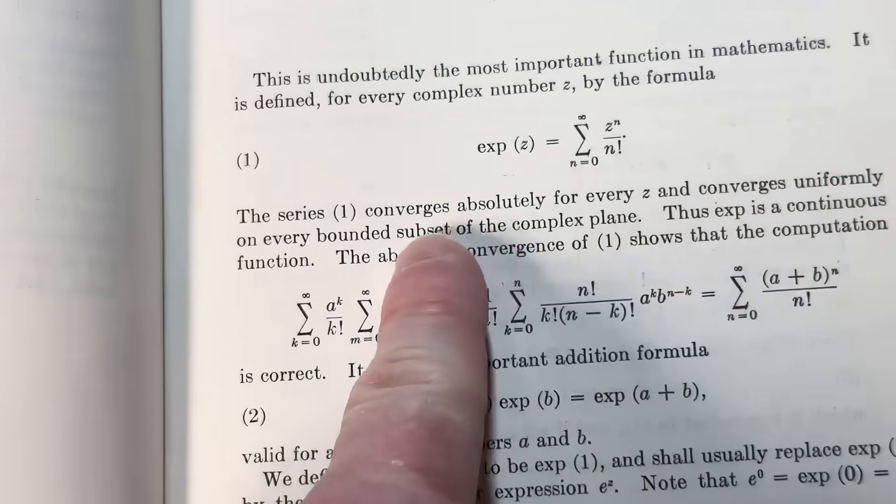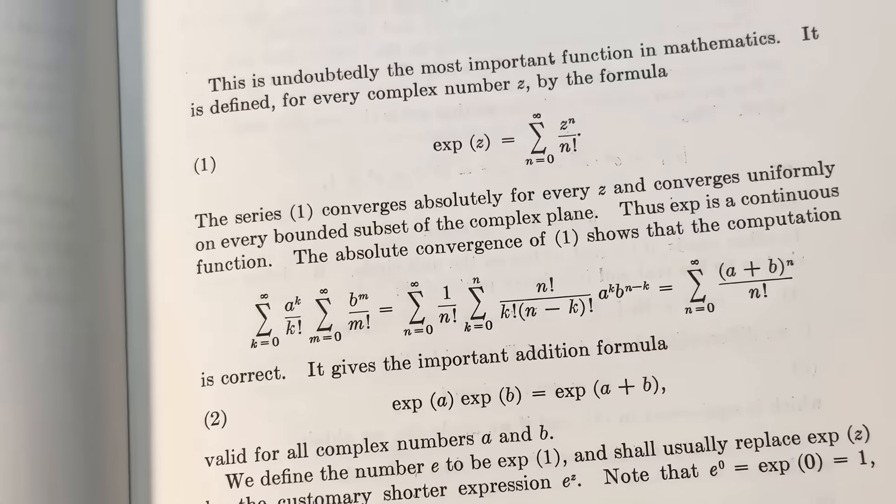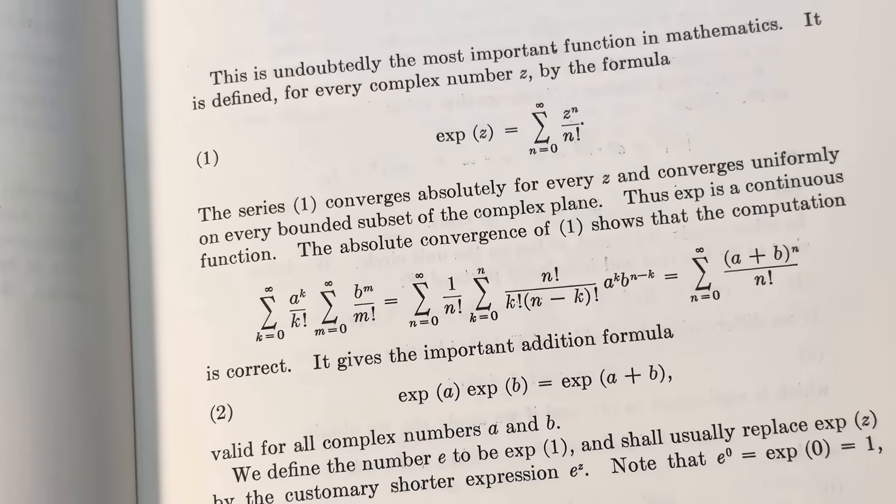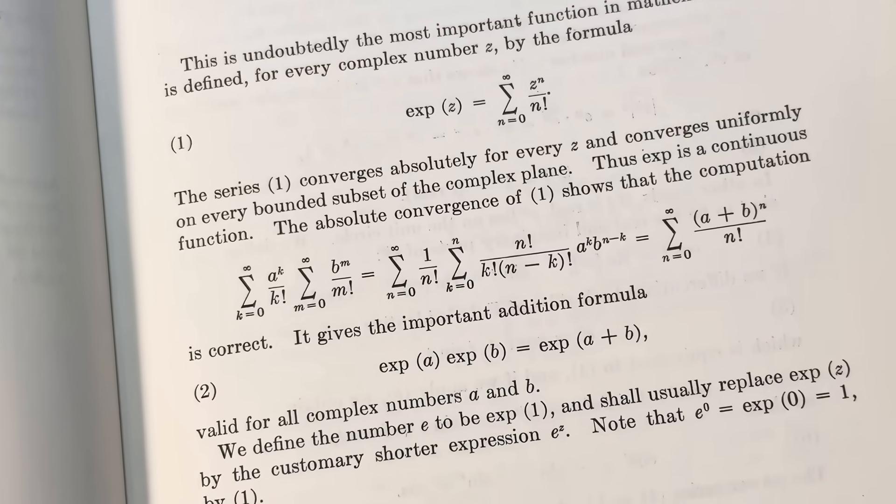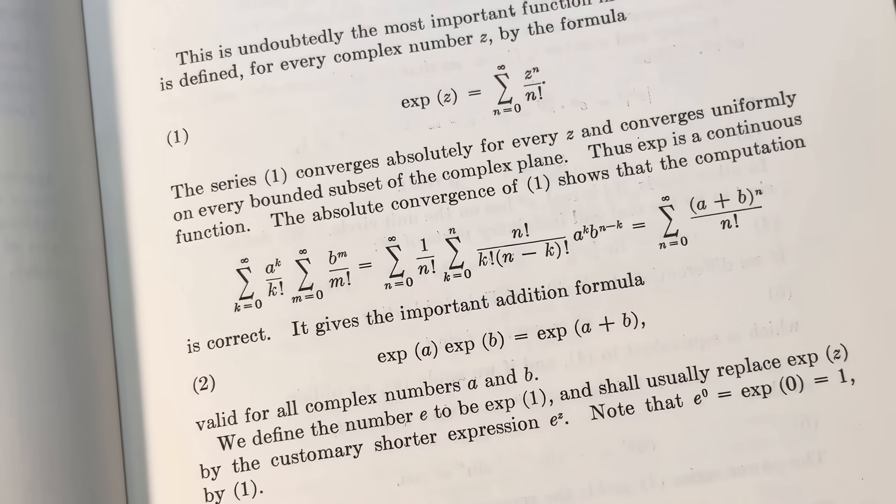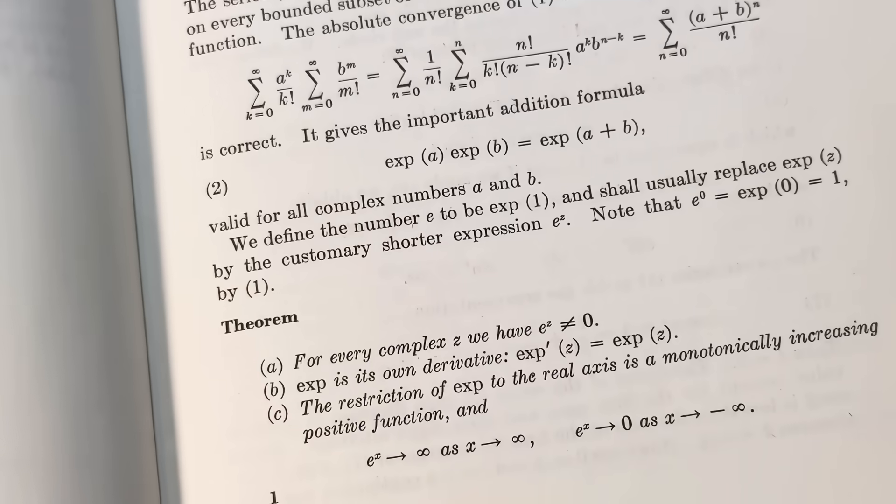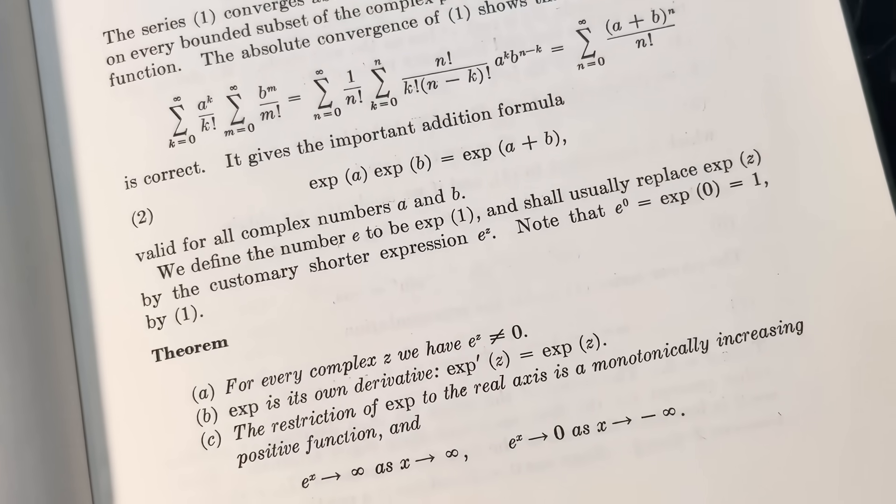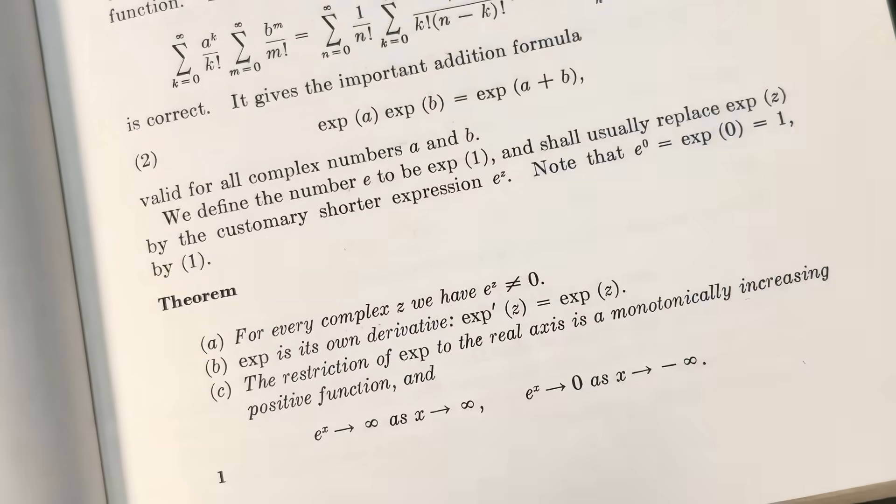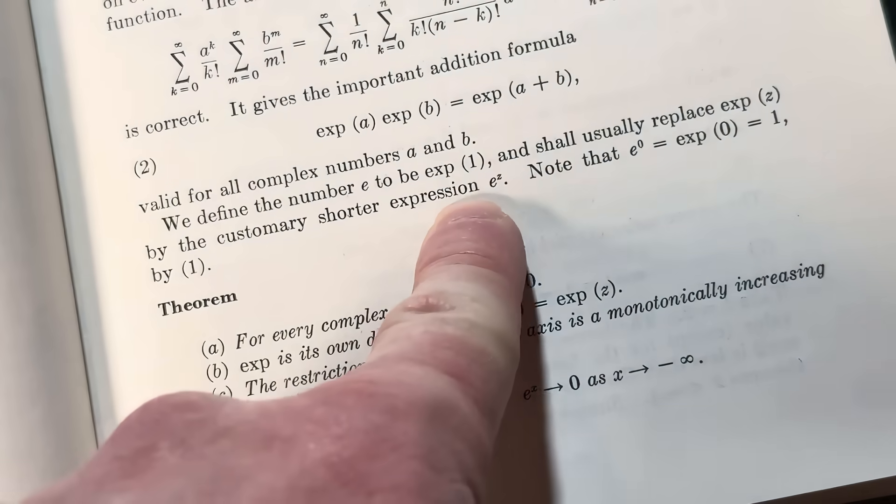So exp of z, or e to the z, it's the infinite sum from 0 to infinity of z to the n over n factorial. The series converges absolutely for every z and converges uniformly on every bounded subset of the complex plane. Thus, the exponential function is a continuous function. The absolute convergence shows that the computation is correct. It gives the important addition formula valid for all complex numbers a and b. And then it tells me, we define the number e to be the exponential function of 1 and shall usually replace exp z by the customary notation e to z.